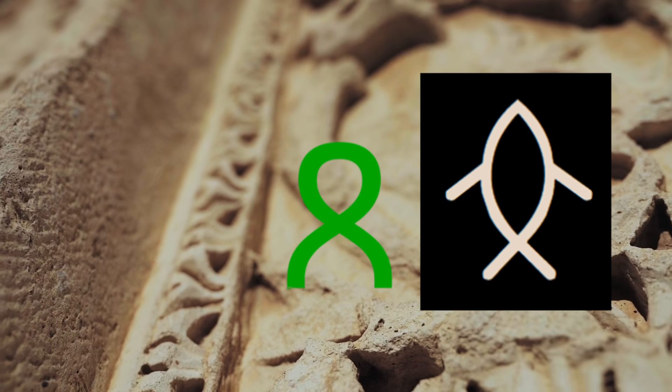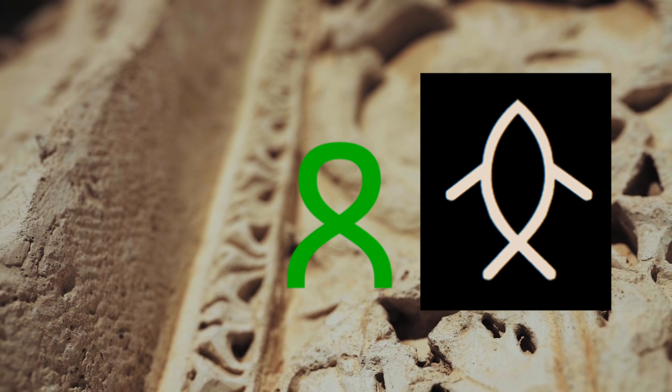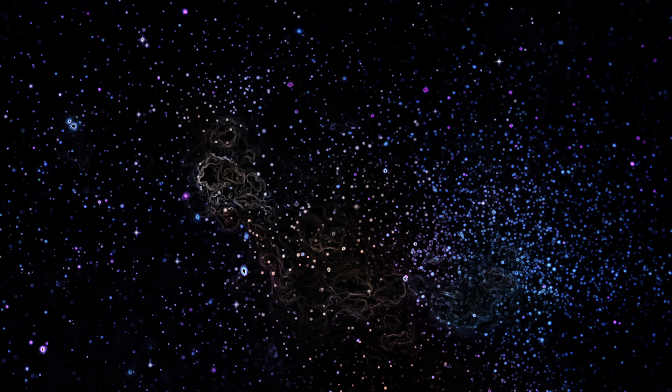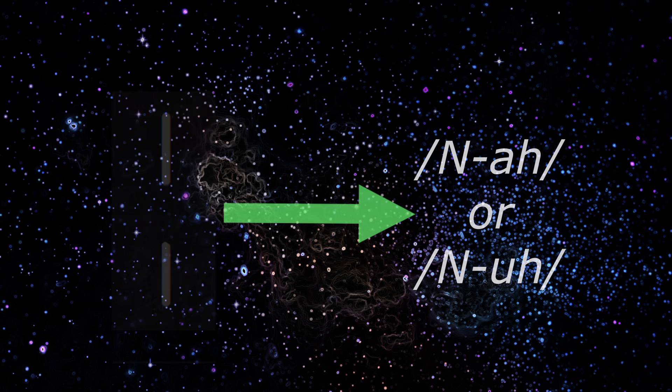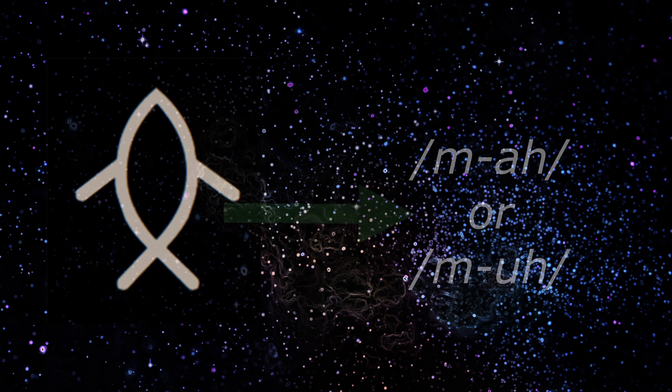And the reason is, if we flip it, it is the exact same symbol for the fish in Indus script. Thus, this validates our earlier hypothesis of Na means the dotted line, and it also gives the meaning for another sign to us, which is the fish sign, which means Ma.